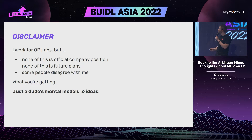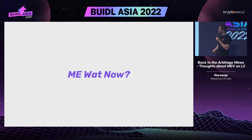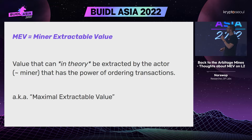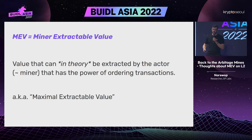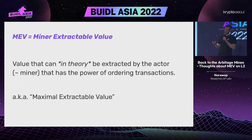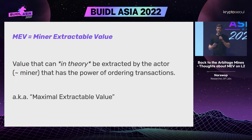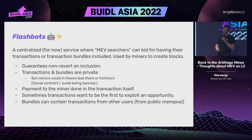So what is MEV? We need to cover that so this talk can make sense. MEV is value that can in theory, but not necessarily in practice, be extracted by some actor. It's called Miner Extracted Value because in Ethereum these actors are the miners. It's also called Maximal Extractable Value, which covers the fact that it's value that can be extracted in theory.